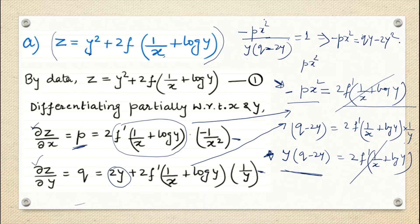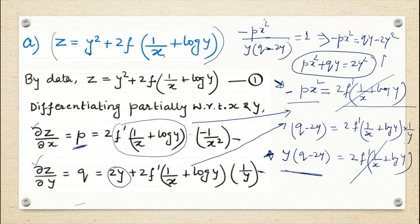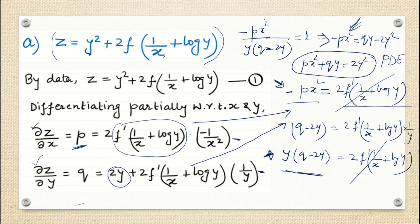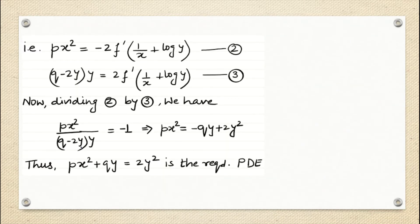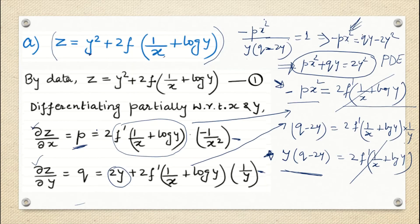This can also be written as p x square plus q y equals 2y square. This is my final answer because the arbitrary function is no longer present — p, x, q, y are all allowed elements. So the required partial differential equation is p x square plus q y equals 2y square.